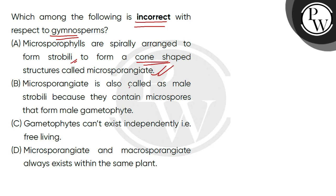Option B says: microsporangiate is also called male strobili. This is correct. Because they contain microspores that form male gametophyte. So we call it male strobili — it contains microspores, which leads to male gametophyte formation. This statement is correct.